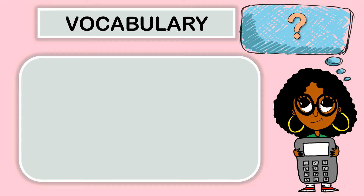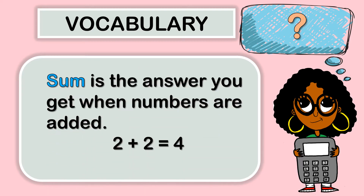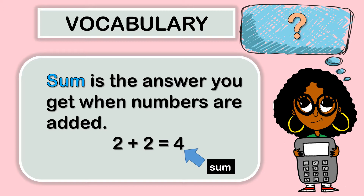First we will look at some vocabulary. Addends are the numbers you add to get the sum. Two plus two equals four — the digits two are the addends. Sum is the answer you get when numbers are added. Two plus two equals four — the digit four is the sum.